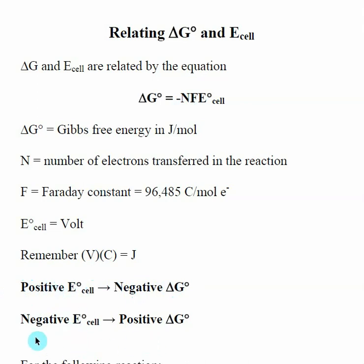So the exact opposite is true. If I had a negative E naught cell, it means as drawn, the electrochemical cell is not flowing electrons. And that corresponds to a positive delta G or a non-spontaneous process.